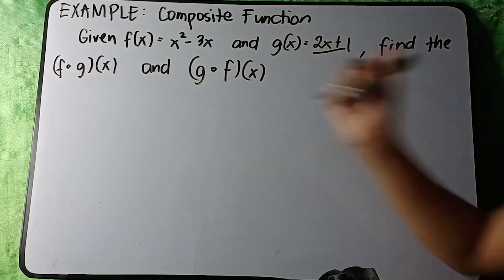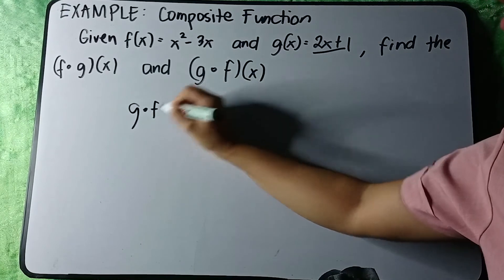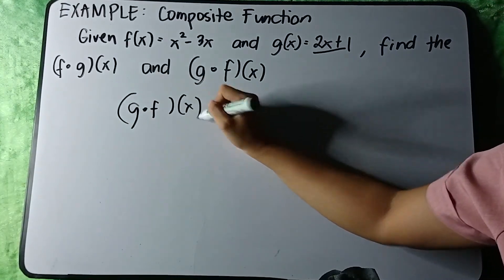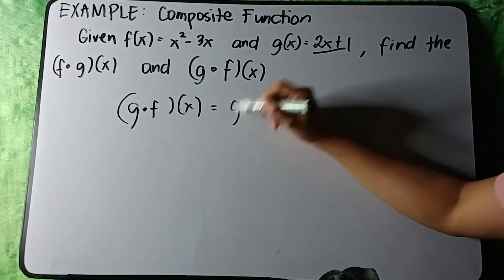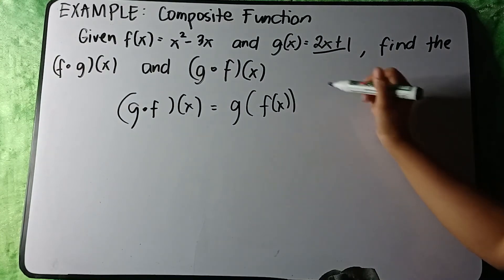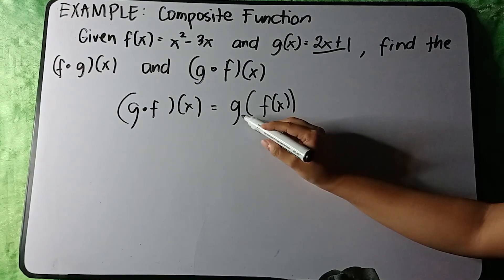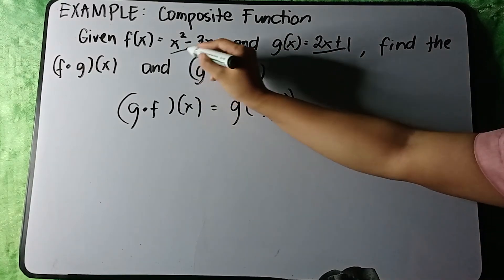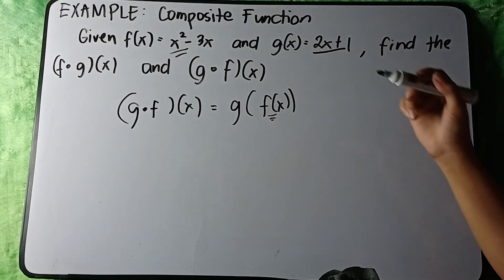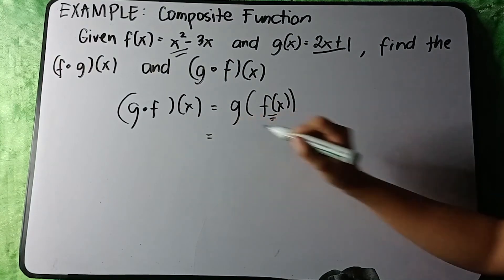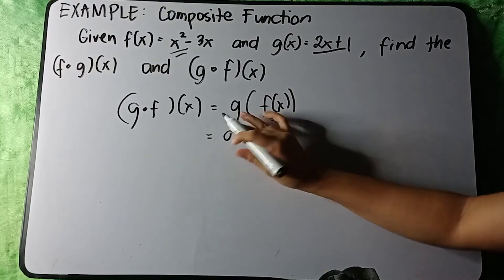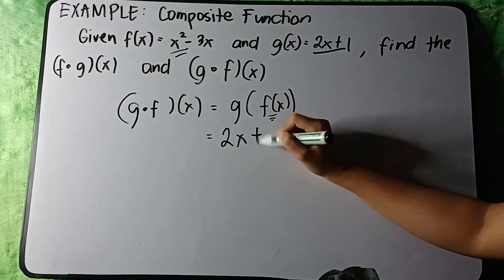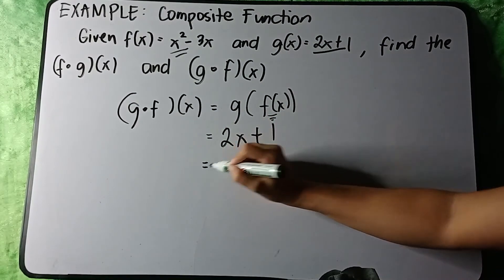Now let's get g(f(x)). For the x in g, it will be substituted with f(x). This is the vice versa of the first one. We have g(x) = 2x + 1, so we are going to substitute x with x² - 3x.